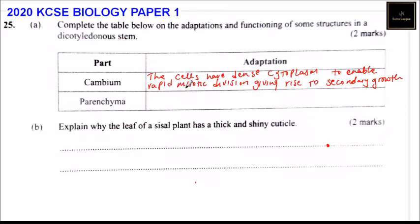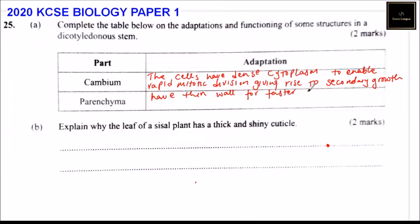We come to parenchyma — the adaptation. Parenchyma is used in photosynthesis, storage, and transport. It forms the bulk of plant ground tissue. We can say the cells have thin walls for faster passage of materials.